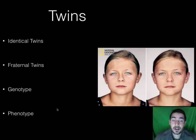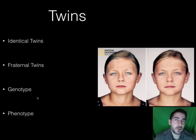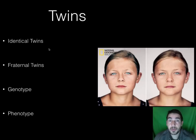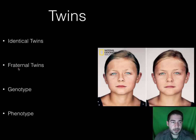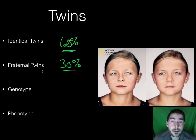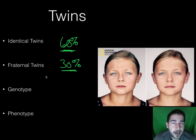We study twins because they are excellent opportunities to test all this stuff out. If identical twins came from the same mom and have the same genetics, we can test how the environment affects them. Sometimes we look at identical twins separated at birth — same genes, completely different environments. For example, with Alzheimer's: if one identical twin has it, the other has about a 60% chance of getting it. In fraternal twins, it drops to about 30%, because they don't share the same DNA.